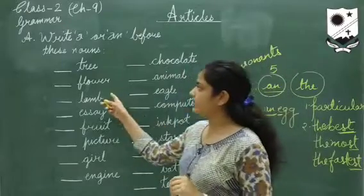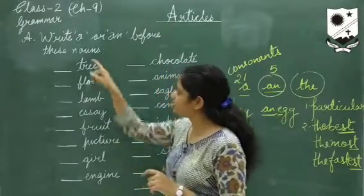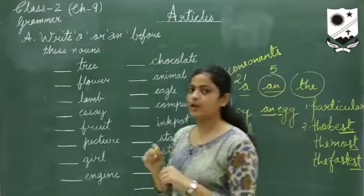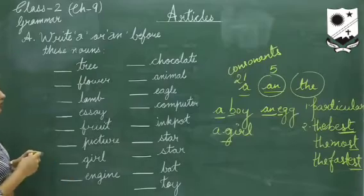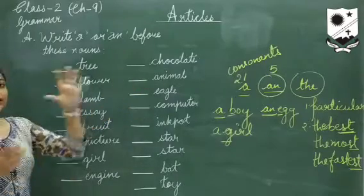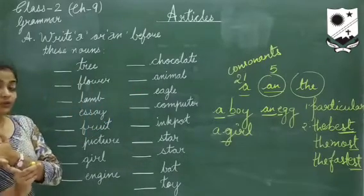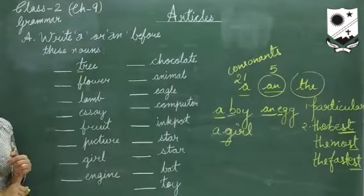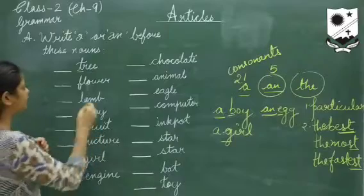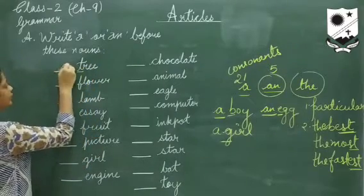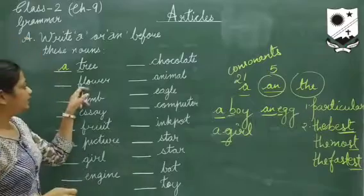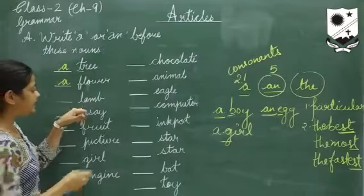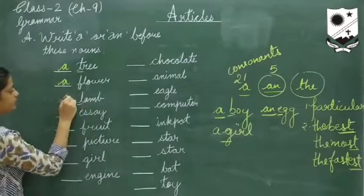Now let us do the first exercise. We have to write 'a' or 'an' before each noun. Wherever a word starts with a vowel, we write 'an'. Tree — it begins with T, which is not a vowel, so we write 'a tree'. Flower — again a consonant, so 'a flower'. Lamb — again a consonant, so write 'a'.